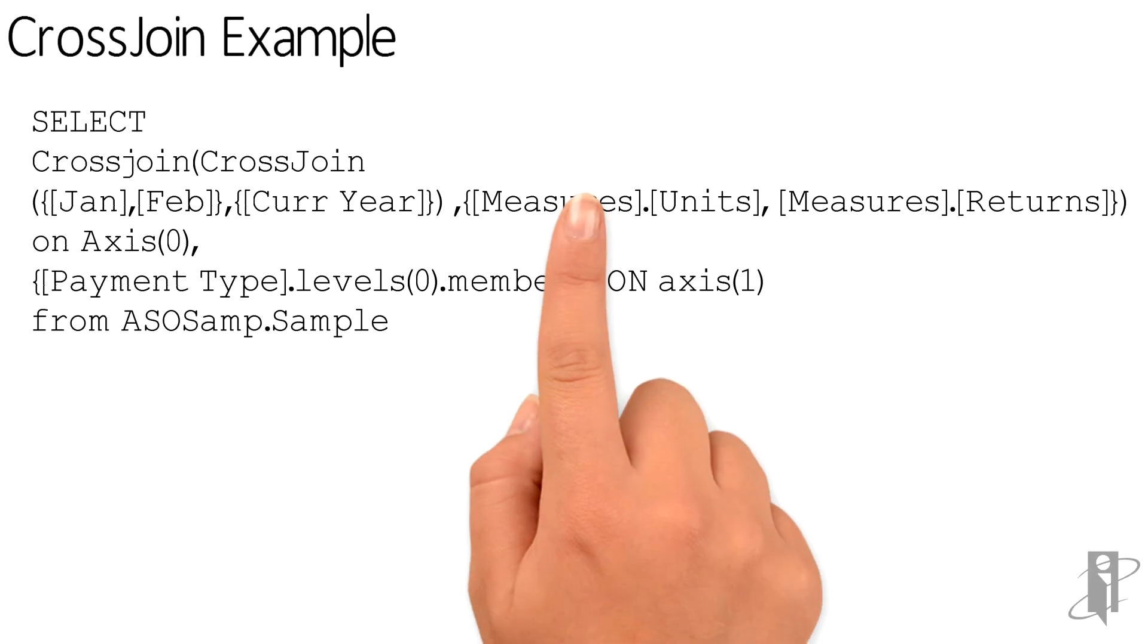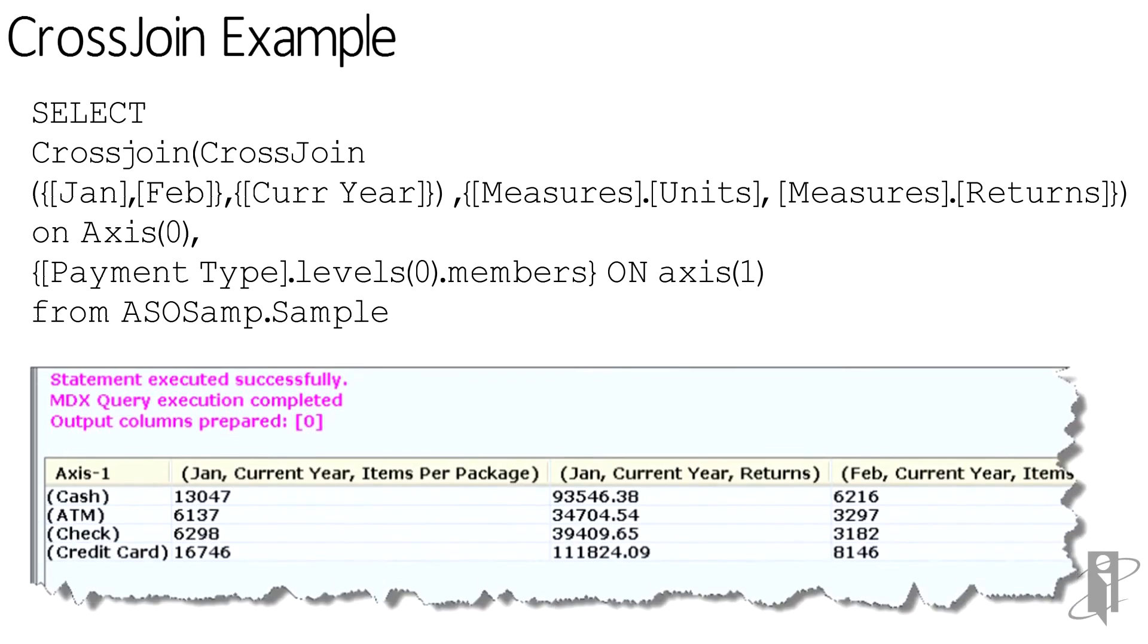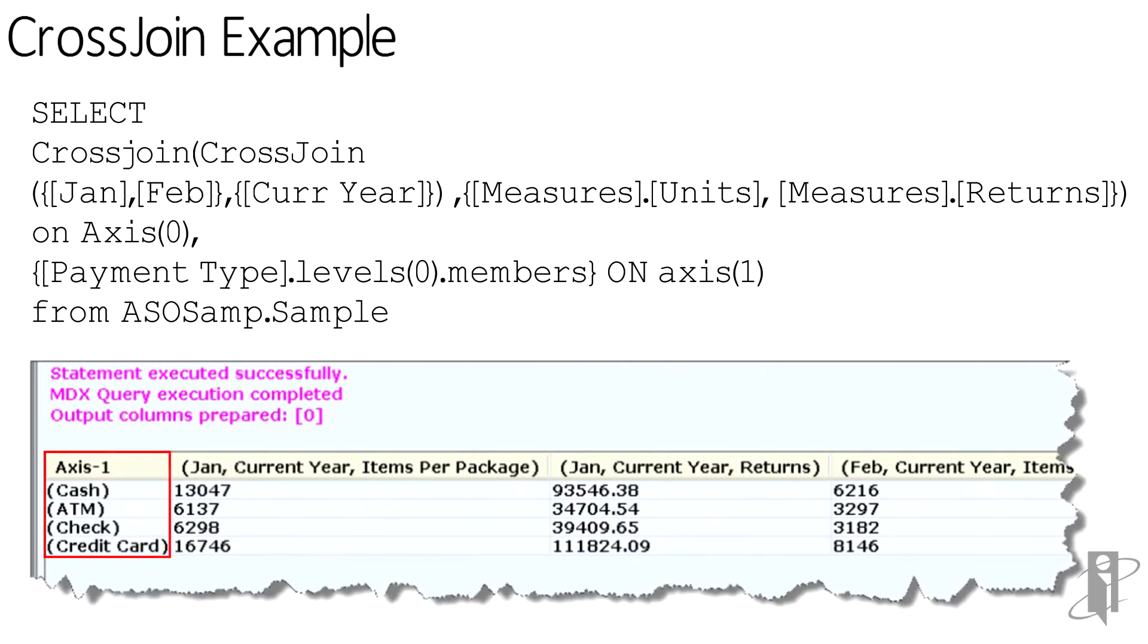Here's a good example of our cross-join, exactly what I showed you. In this case we're joining all of those together. What we see on axis one is the payment types, and then across the top we're getting the cross-join members of January current year items per package, which happens to be units, and returns as well.